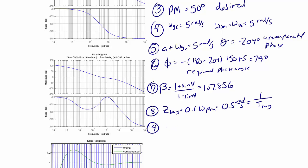Step nine, p lag is equal to z lag over beta, which is 0.5 over 107.856 or 0.0046 radians per second, and this is also equal to 1 over beta t lag.